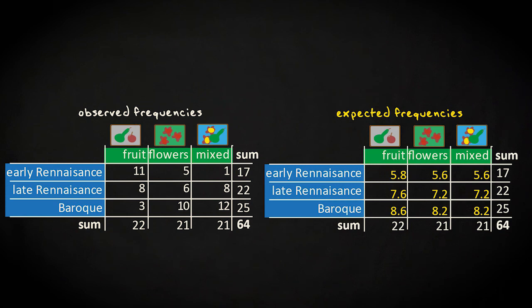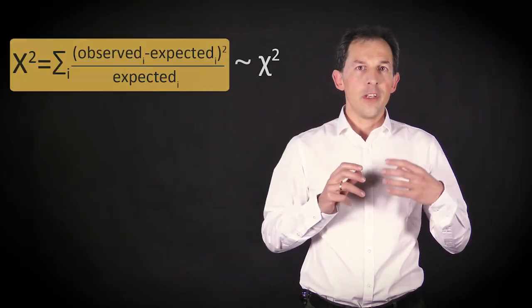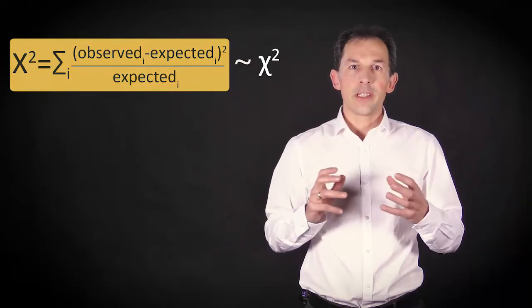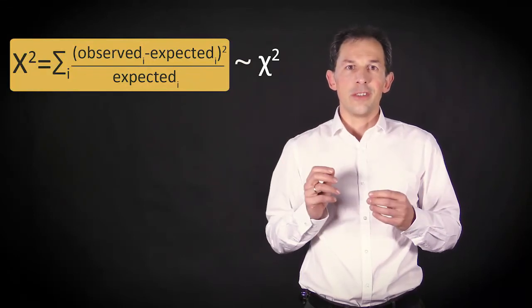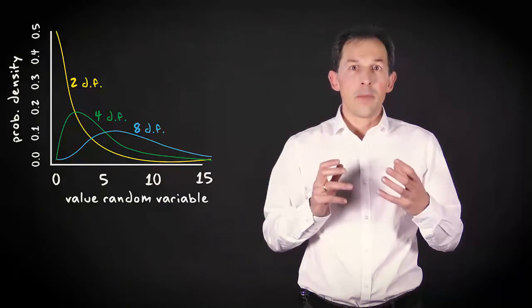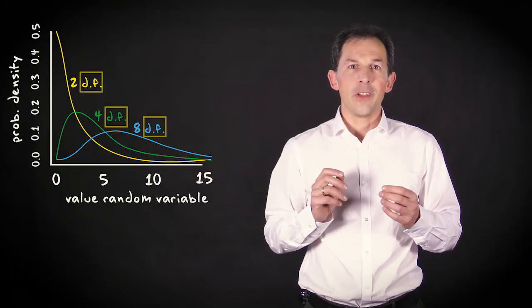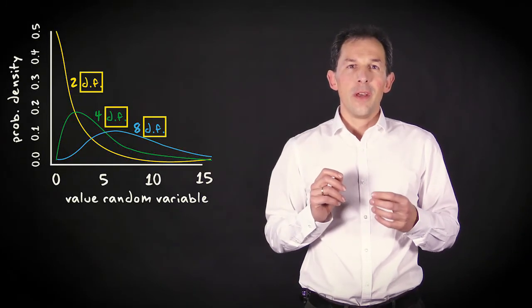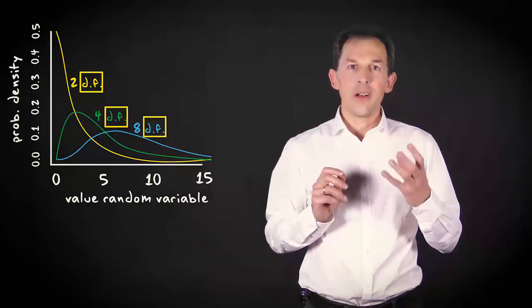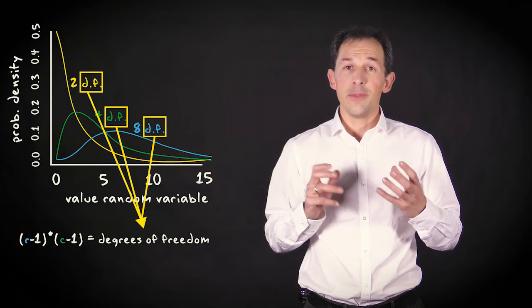The expected joint counts calculated in this way are what you expect if the two categorical variables are independent. The total relative difference between the observed and expected counts form the chi-squared statistic via this equation. You find the p-value for the chi-squared statistic with the chi-squared probability distribution. It has only one parameter, the degrees of freedom. With a contingency table of r rows and c columns, the degrees of freedom parameter equals r-1 times c-1.